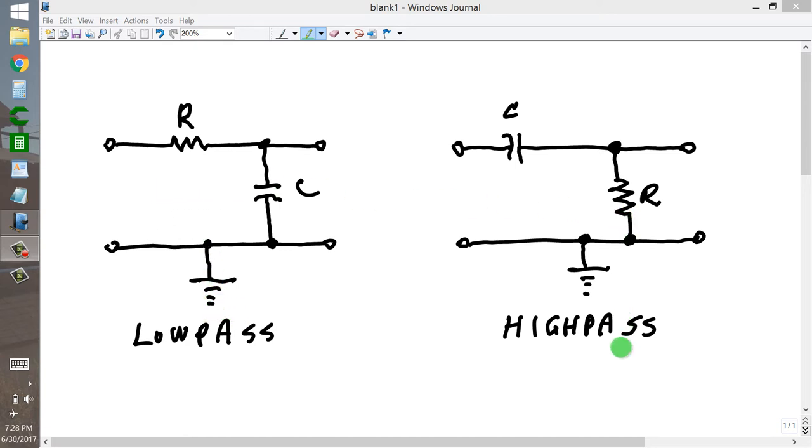In any case, the low-pass and the high-pass filter are the most elementary forms of frequency-sensitive filter. As their names imply, the low-pass filter tends to allow low-frequency signals through with ease and discriminate against higher-frequency signals.